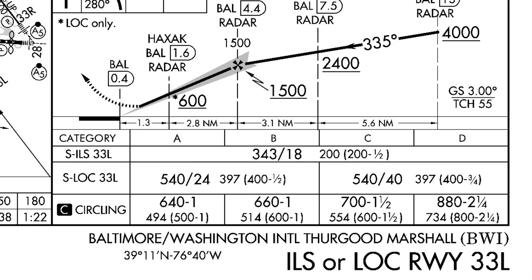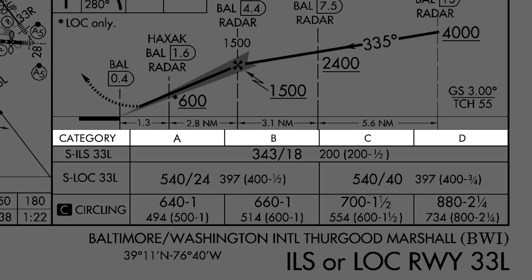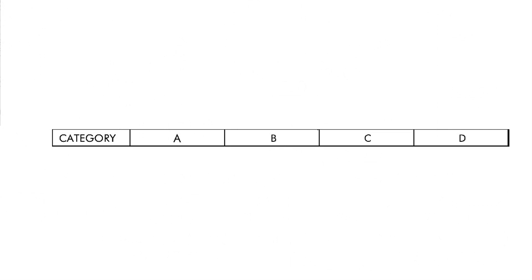Next, instrument approach categories are based on the speed you're flying on final approach. For example, a Cat-B aircraft will be doing between 91 and 120 knots. This is indicated airspeed. FAR 97.3 defines approach categories based on V-Ref. If your aircraft doesn't have a published V-Ref, you use another V-speed: VSO times 1.3. All V-speeds are indicated airspeeds. This includes things like stall speeds and maneuvering speeds, among others.